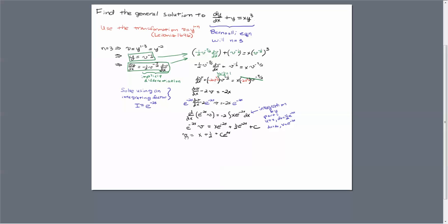And now, since we have v, we can use this transformation to convert back to in terms of y. And recall that v is equal to y to the minus 2 power. That comes from the original transformation here. So that means that y squared is equal to 1 over v. I just invert each of these.